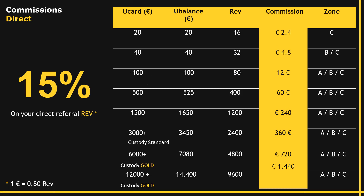Looking closely at this: the 20 euro U-Card is the entry level for Zone C. The 40 euro U-Card is the entry level for Zone B, but it can also be purchased by people in Zone C. Then you have the 100 euro U-Card, which is the entry level for Zone A. You can go back and check what Zone A, B, and C are. Here in yellow you have the commissions and the amounts paid for each.